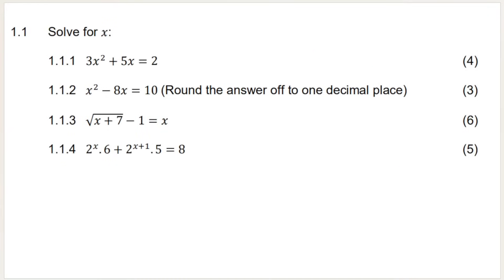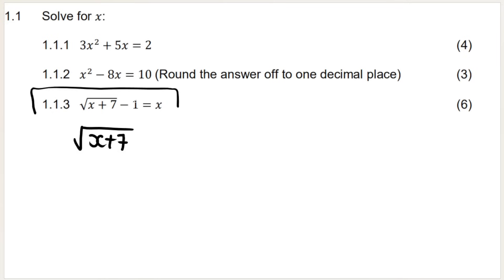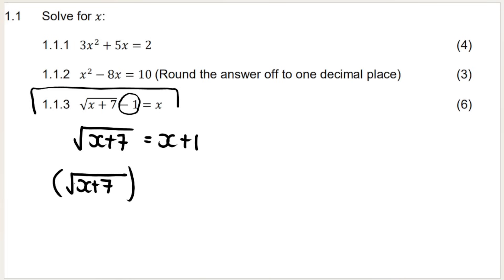Question 1.1.3 has a square root equation. My first step when solving this type of equation is to isolate the root. The inverse operation of minus 1 is plus 1, so I add 1 to both sides. The next step is to square both sides — the square and the square root cancel out, leaving x plus 7 on the left-hand side.